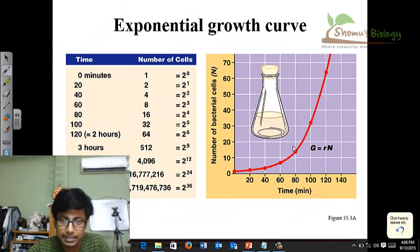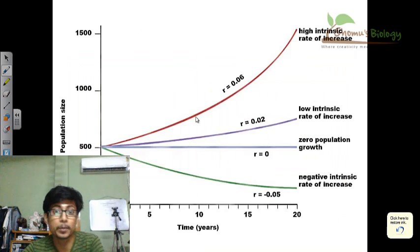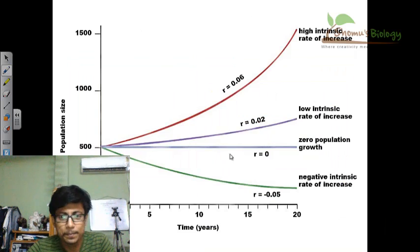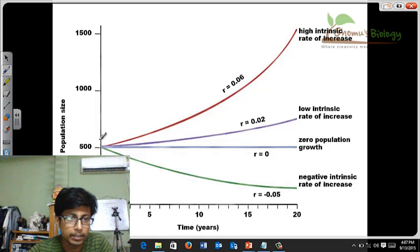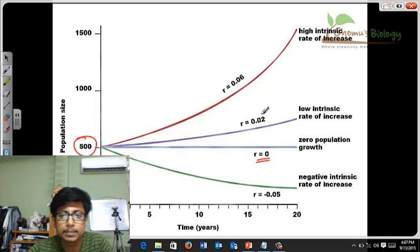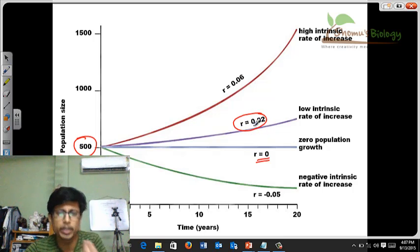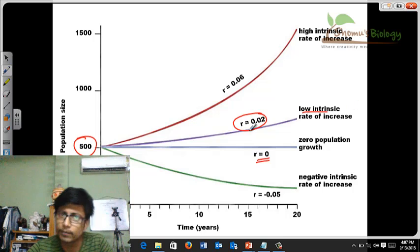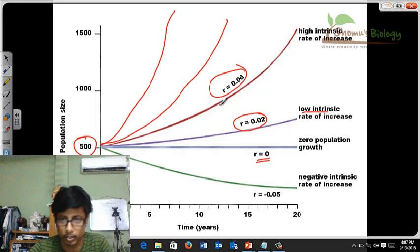But now this exponential growth curve will divide exponentially. If we begin with a population size that started with 500 individuals for example, we see r equals 0 because it is the start point. Now, if the intrinsic rate is a plus value that is very low, 0.02 for example, the intrinsic rate is low but obviously the individuals slowly start to grow and rise. If the intrinsic rate is higher, they will rise more and more. If it is more higher, it will rise more and more and so on.